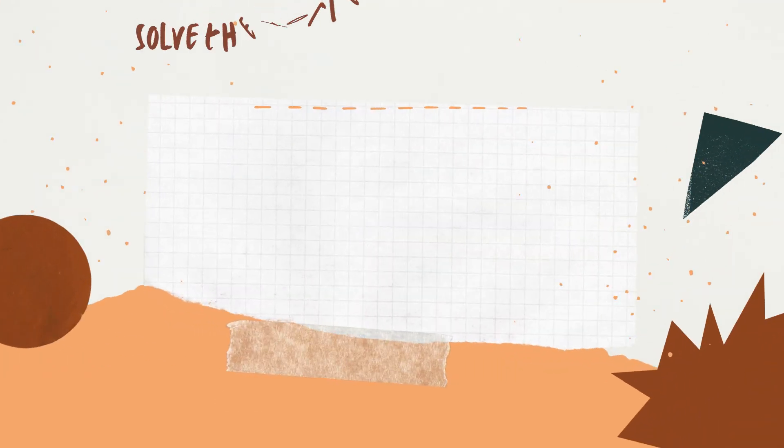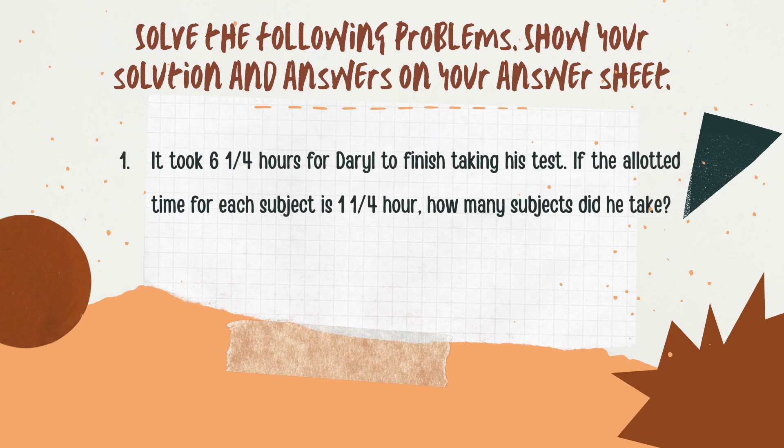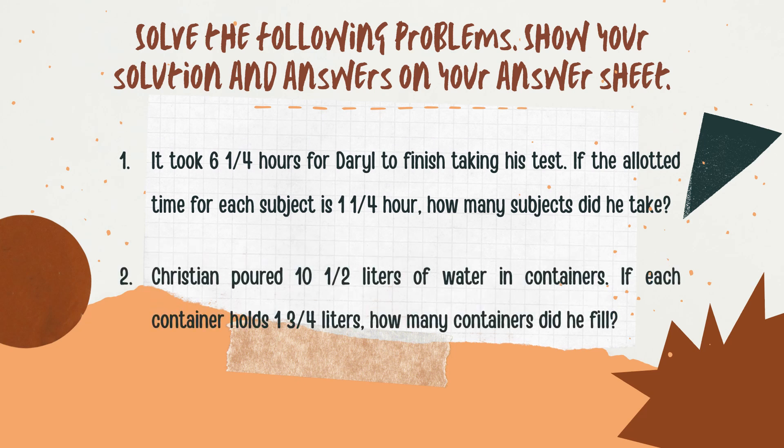Now solve the following problems. Show your solution and answers on your answer sheet. Number 1: It took 6 and 1 fourth hours for Daryl to finish taking his test. If the allotted time for each subject is 1 and 1 fourth hours, how many subjects did he take? Number 2: Christian poured 2 and 1 half liters of water into containers. If each container holds 1 and 3 fourths liters, how many containers did he fill?